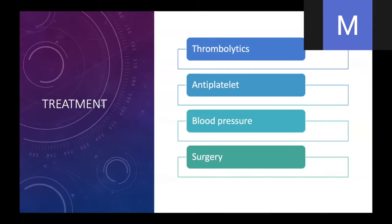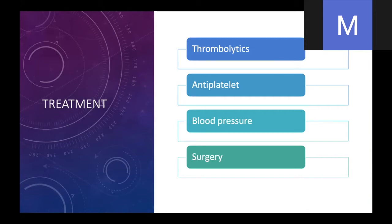In general, when somebody comes in with a stroke, the only acute treatment we have that's FDA approved is thrombolytics. There's only been two positive studies looking at using thrombolytics, and we're going to talk about those studies and their limitations. People say in emergency medicine there are two kinds of physicians: those that believe in thrombolytics and those that don't. I'm sort of middle of the road, but if it's me and I'm within the window, I think I would probably get the thrombolytics. Anti-platelet medication really is for preventing future strokes — starting aspirin, which is more preventative and needs to be done within the first 48 hours or so.